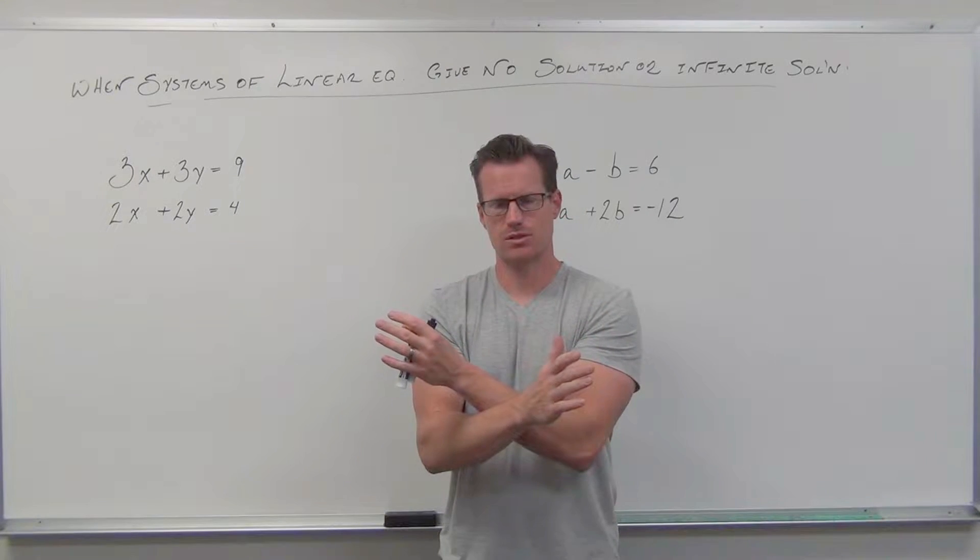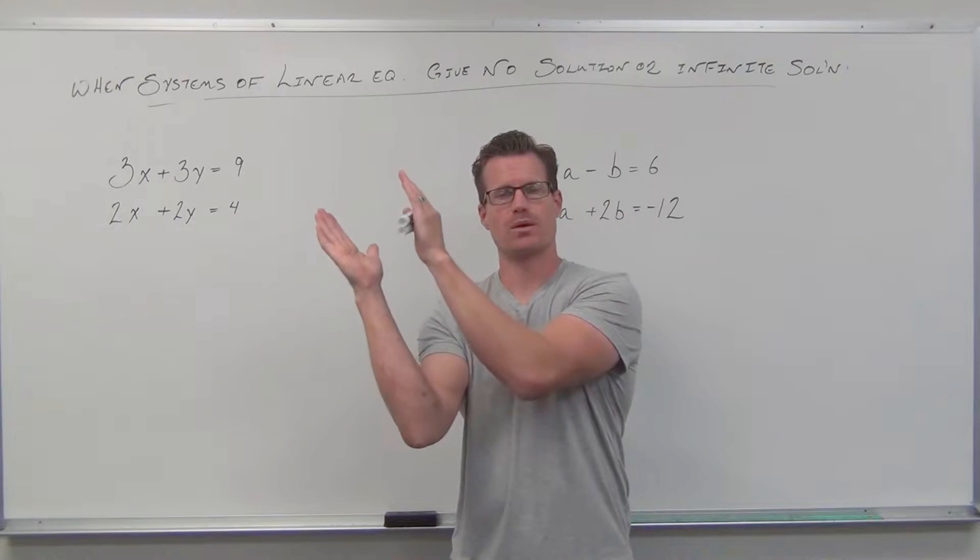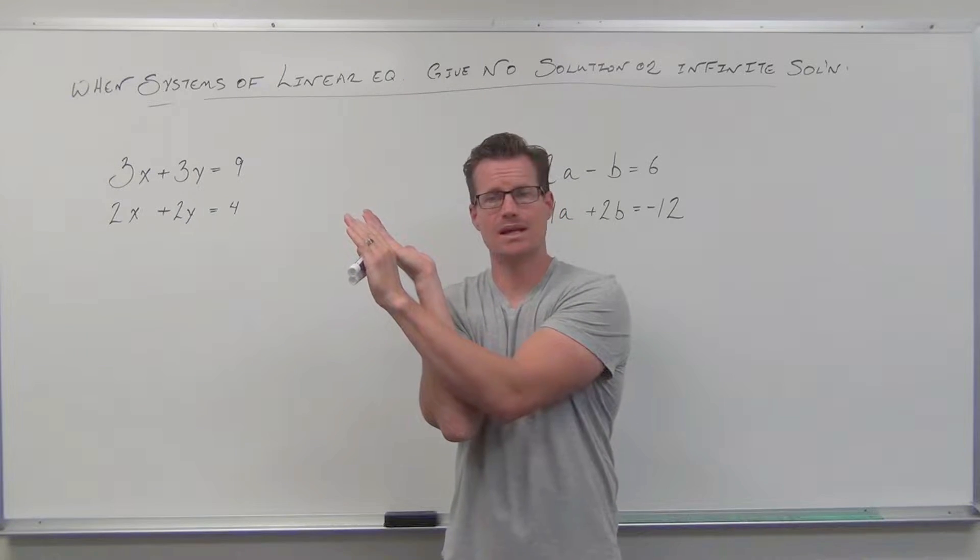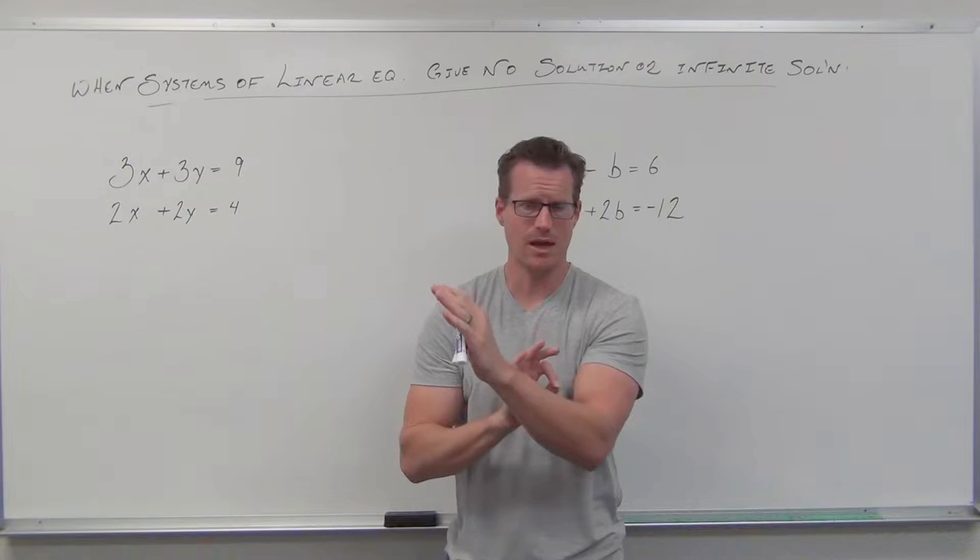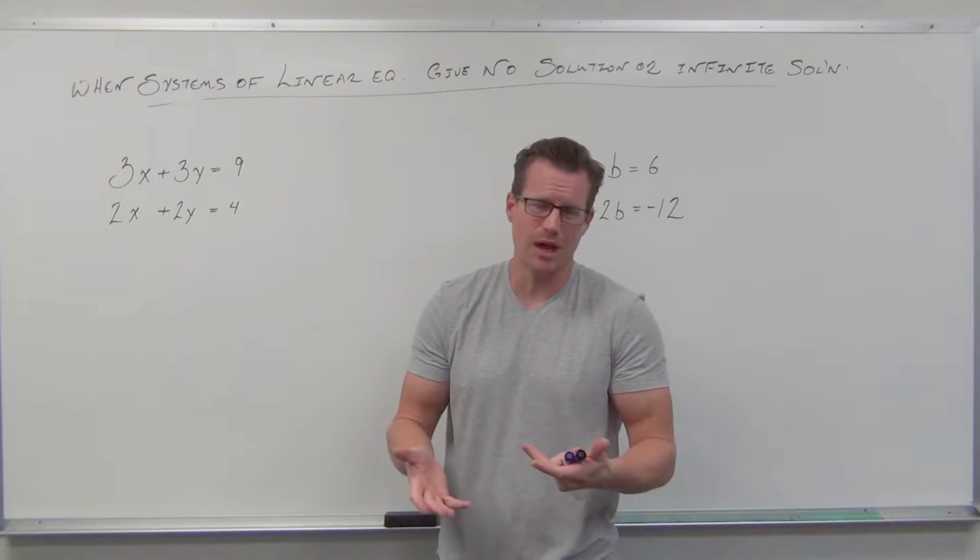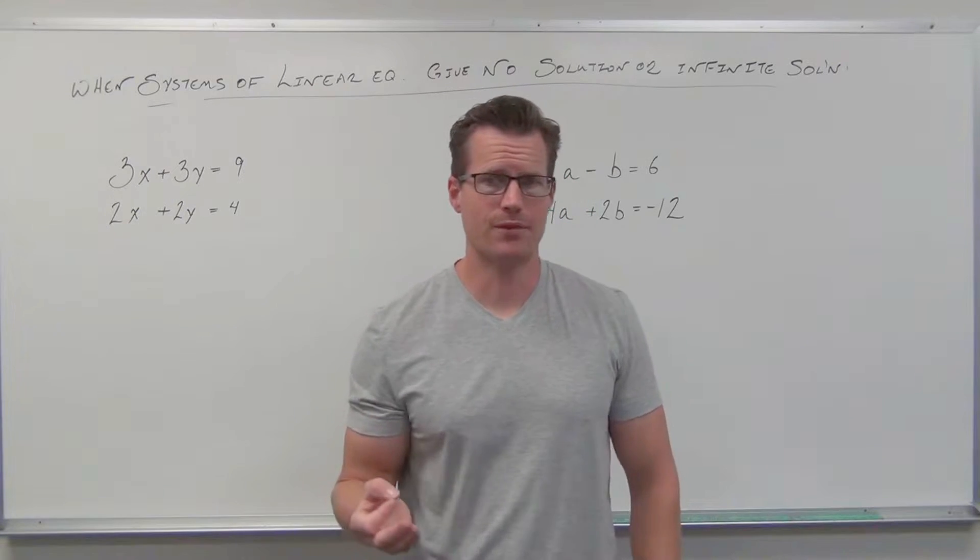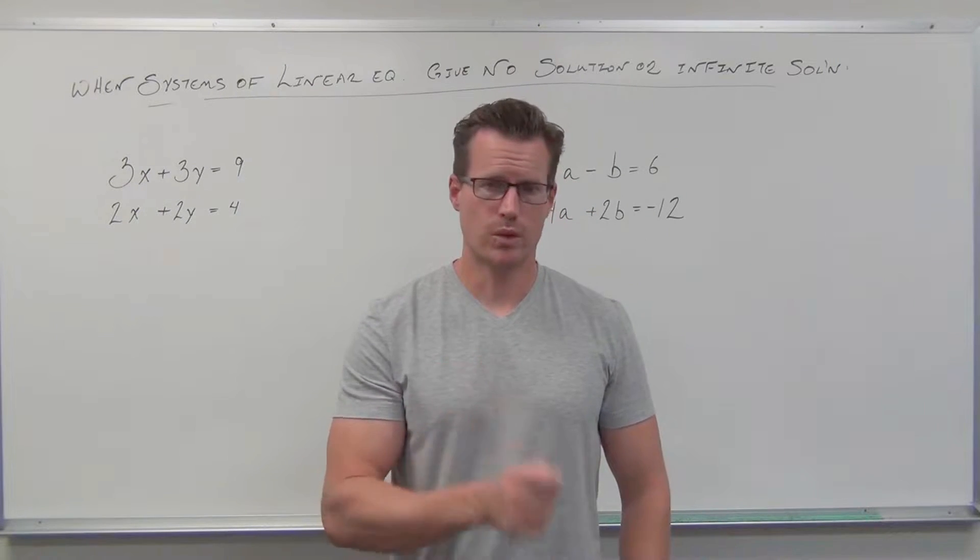But we also had two other cases. We had the case where our lines are parallel and we don't get an intersection. Or when we have exactly the same line, we get a constant intersection at every single point because you have the same line. They're overlaid on top of one another. We're going to discover what that looks like algebraically without having to graph it. So these are going to look weird.